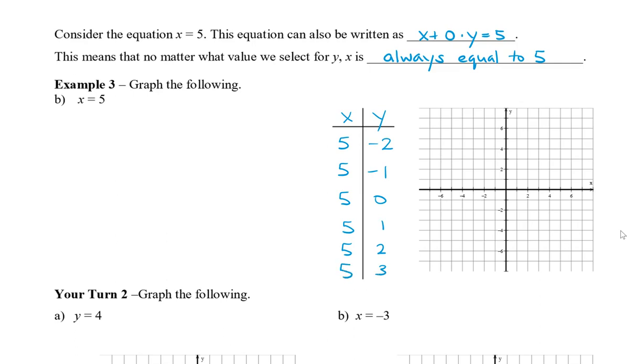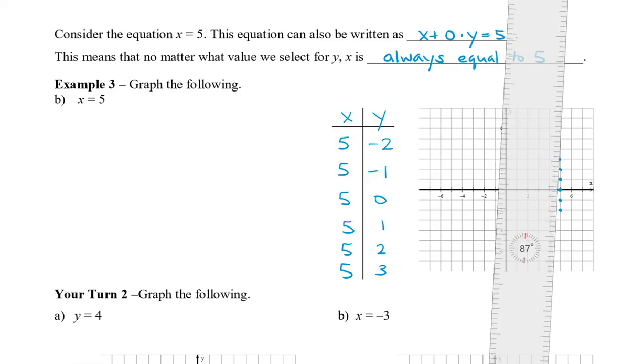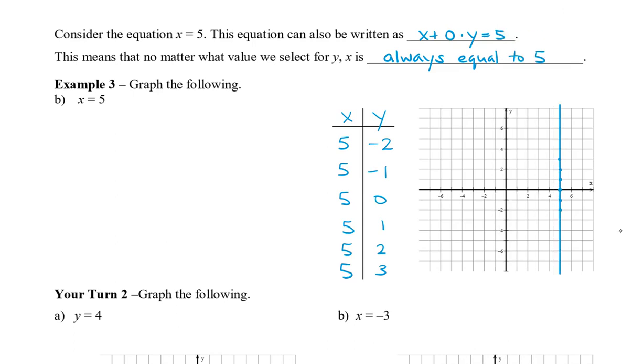So, graphing this, we get 5, negative 2; 5, negative 1; 5, 0; 5, 1; 5, 2; 5, 3; and so on. So, this time, you can see that when I connect my points together, I get a vertical line. And we'll draw this with arrows.